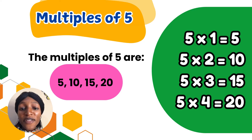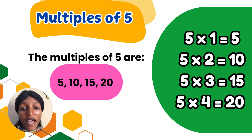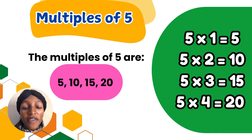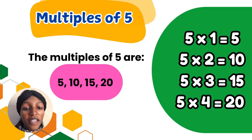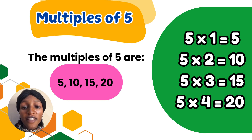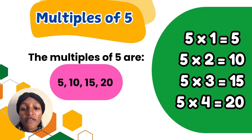The multiples of 5. 5 times 1 is 5. 5 times 2 is 10. 5 times 3 is 15. 5 times 4 is 20. Now, the multiples of 5 — let's say together: 5, 10, 15, 20.